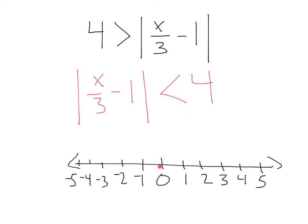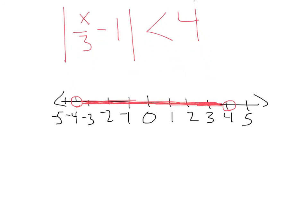Let's go down to our number line here. We're interested in 4 spaces from 0. So that's going to be 1, 2, 3, 4 at the negative 4 — I'm going to do an open dot. And then on the other side, 1, 2, 3, 4 — I'm going to do another open dot. And we're looking for the values that are less than 4 spaces from 0. That's going to be everything in between these two values, because we want less than 4 spaces from 0. This is going to be x over 3 minus 1. Remember, whatever is in our absolute value, that's what we need to include down here. And this is in between negative 4 and 4.